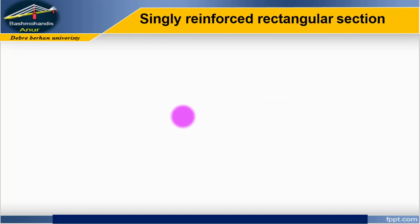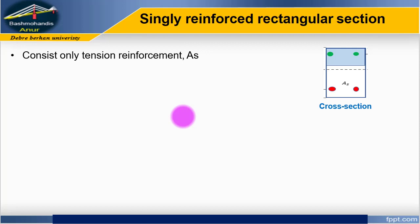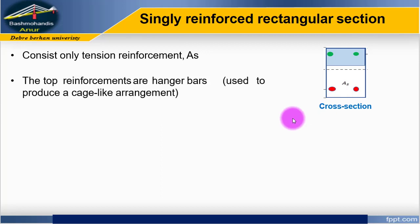A singly reinforced section is a beam section that consists only of tension reinforcement, As, tied to a rectangular section. For a singly reinforced section, there is no top compression reinforcement. However, two bars at the top are required — those bars are called hanger bars.